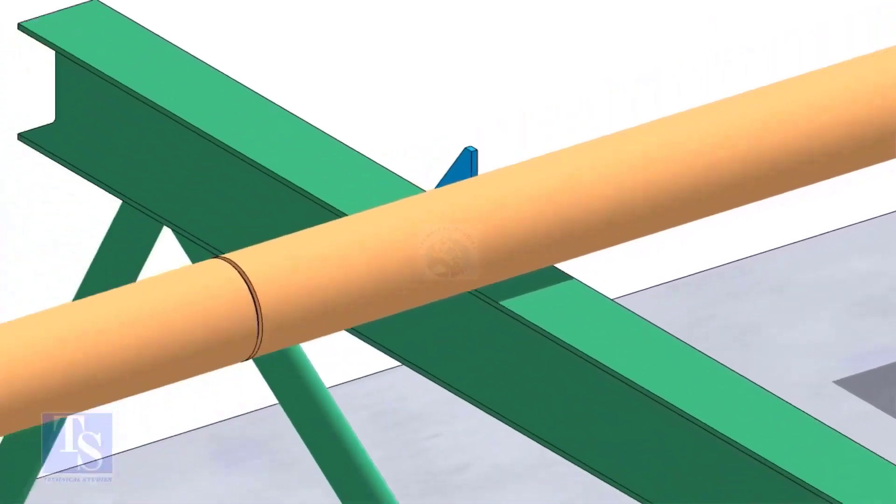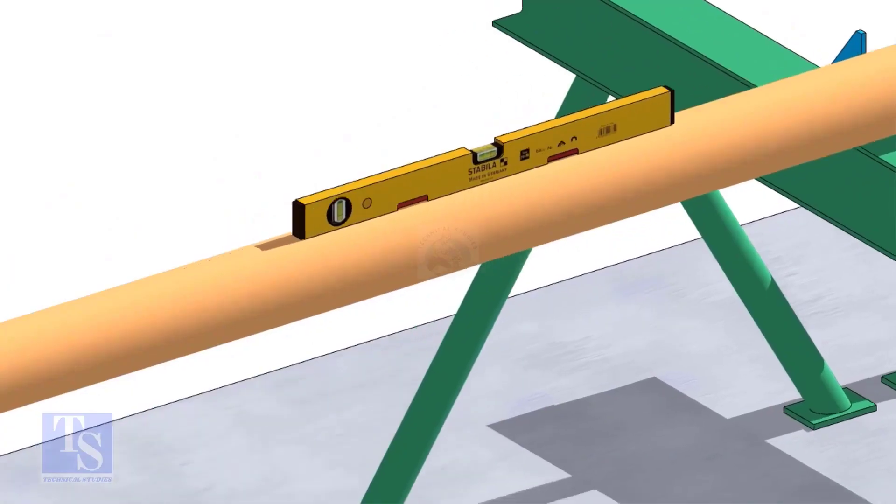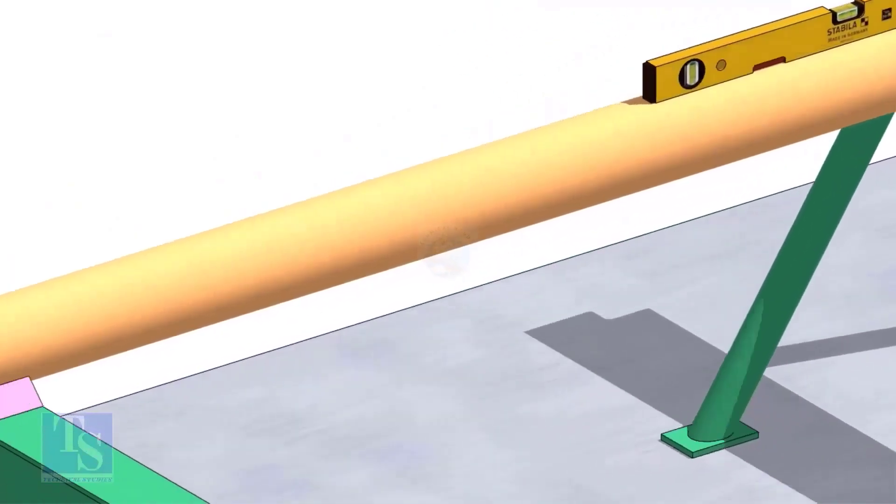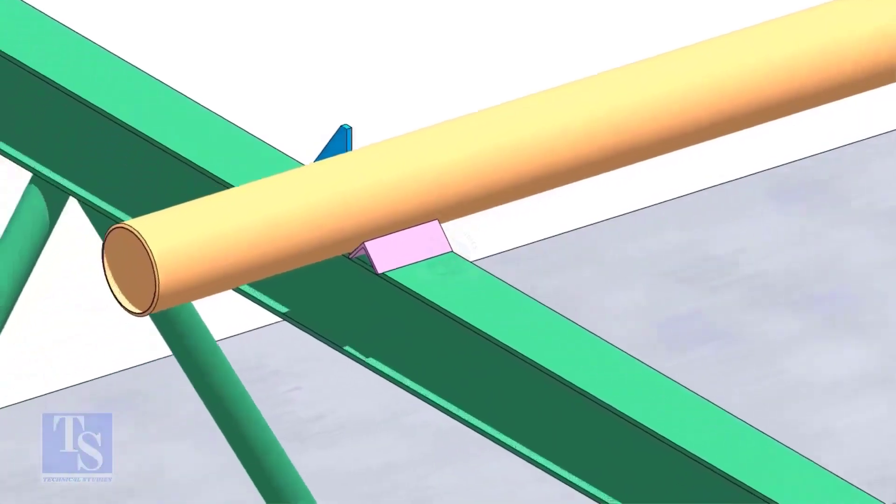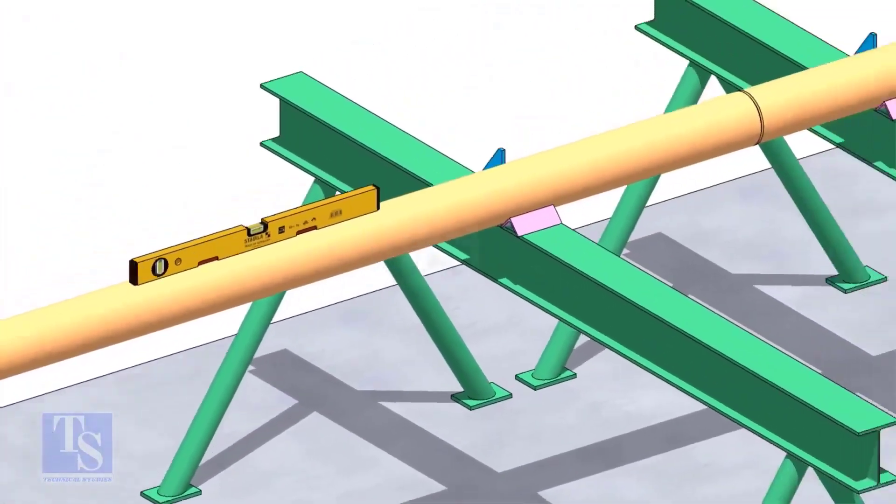You can cross-check the level of the pipes. Arrest the pipes from the other side, using wedges or angle stubs.